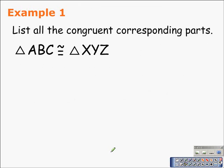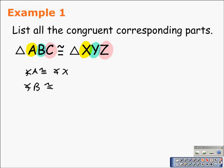Example 1 lists all the congruent corresponding parts. We are told that triangle ABC is congruent to triangle XYZ. From the congruent statement, we can conclude that A corresponds to X, B corresponds to Y, and C corresponds to Z. So when we write out the congruent corresponding parts, we would say angle A is congruent to angle X, angle B is congruent to angle Y, and angle C is congruent to angle Z.